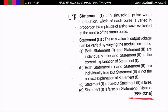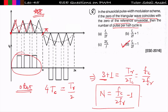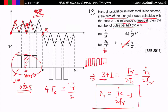The ninth question, asked in ESE 2016: in sinusoidal pulse width modulation, the width of each pulse is varied in proportion to the amplitude of the sine wave evaluated at the center of the same pulse — this is correct. The pulse width is more at the center (near 90 degrees) and less at the corners, following the magnitude of the sine wave. Statement 1 is correct.